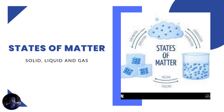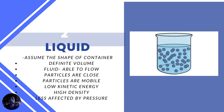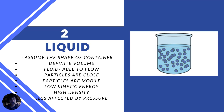The states of matter — there are three main states, though nowadays plasma is considered a fourth. Solid has definite shape, is rigid, has definite volume, particles are close together, particles can hardly move, very low kinetic energy, high density, and is not affected by pressure. Liquid assumes the shape of its container, has definite volume, is fluid and able to flow, particles are mobile, low kinetic energy, high density, and less affected by pressure.